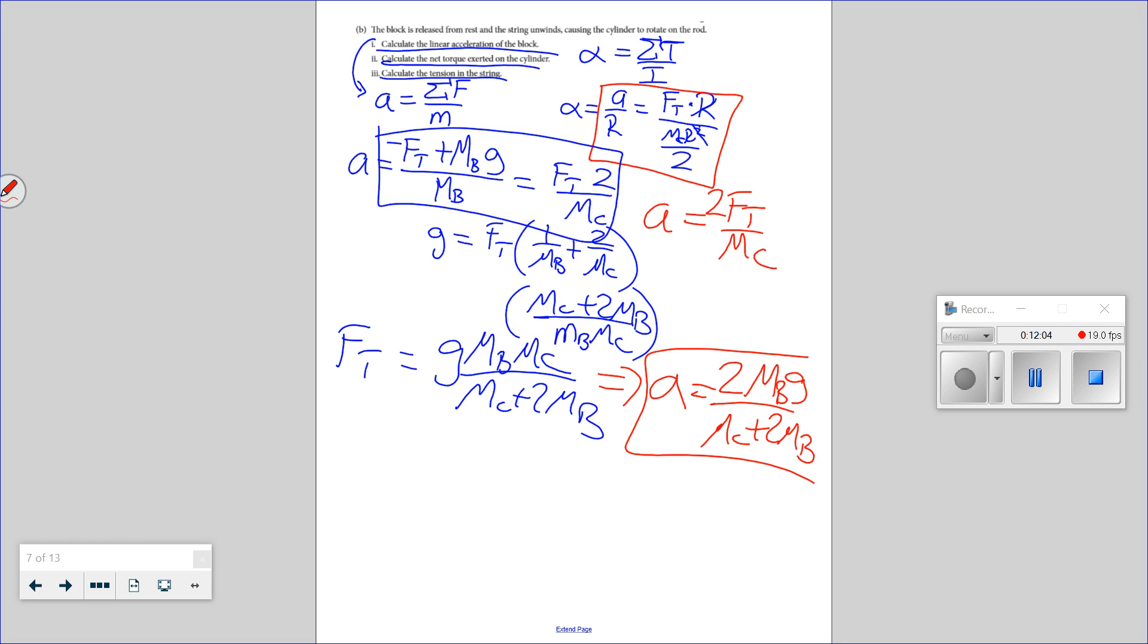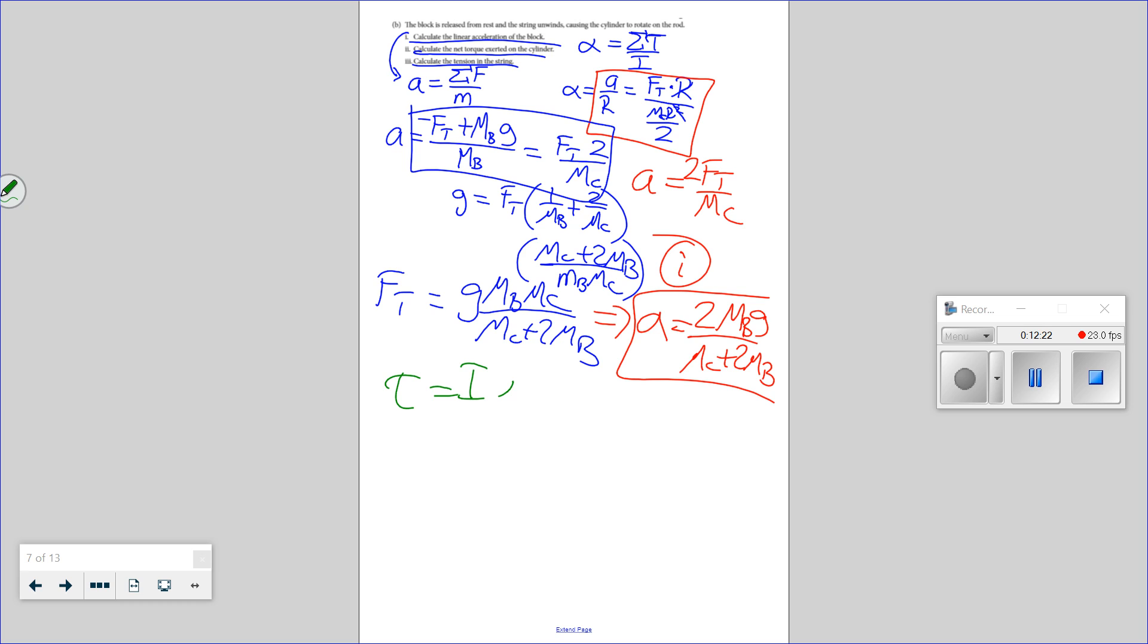Calculate the torque exerted on the cylinder. Torque equals I alpha. And alpha is A over R. So we got to multiply MR squared mass of the cylinder over 2 times alpha which is this divided by R. Times 2 MB G over MC plus 2 MB. We get one more R gone. We get the 2's gone. So the torque is MC MB G over R divided by MC plus 2 MB. And that's number 2.